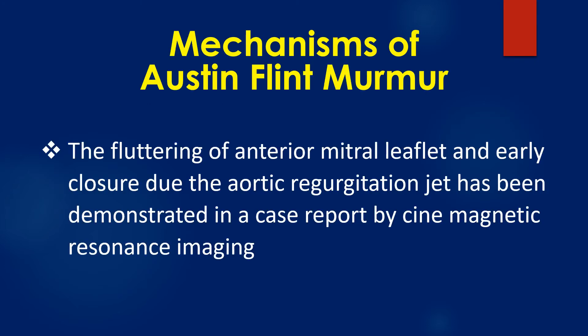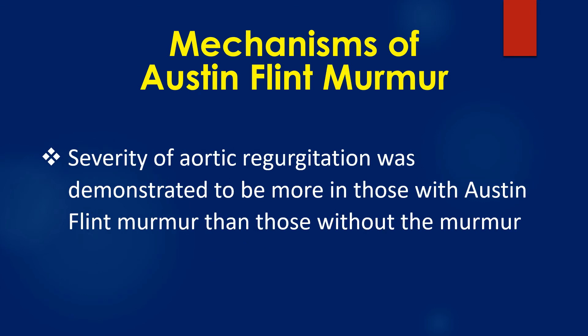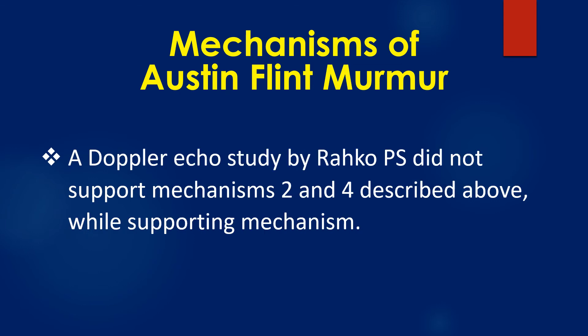Fluttering of the anterior mitral leaflet and early closure due to the aortic regurgitation jet has been demonstrated in a case report by Cine Magnetic Resonance Imaging. Severity of aortic regurgitation was demonstrated to be greater in those with Austin Flint murmur than in those without the murmur. A Doppler echo study by Rakopoulos did not support mechanisms 2 and 4 while supporting mechanism 1.